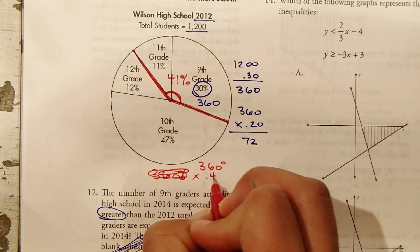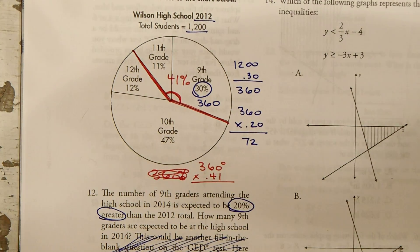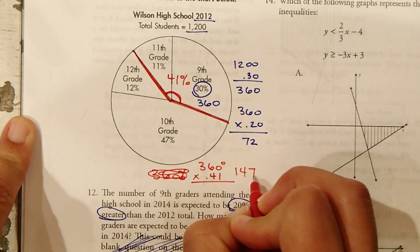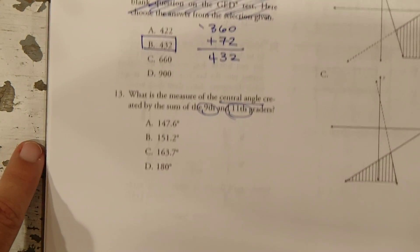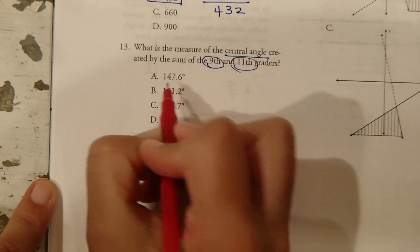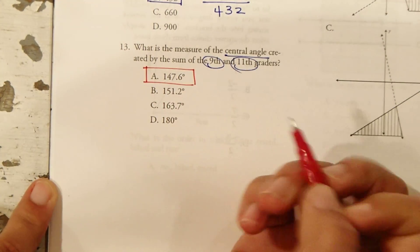So what is 41% of 360 degrees? Well, again, we multiply by the decimal 41%. So 360 times 0.41 equals 147.6. So now let's go back down to our answer A, 147.6.